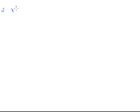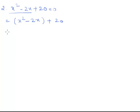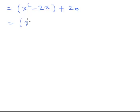We'll take some more examples. Suppose you have an equation x² - 2x + 20 = 0. Among the first two terms, the coefficient of x² is 1, so there is no need to take anything common. You can just separate these terms with a bracket. Now, to make it a complete square, you have x² - 2 times x times 1, so you are running short of 1.